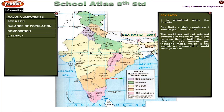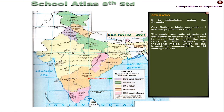Sex ratio is calculated using the formula: Sex ratio equals male population divided by female population, multiplied by 100. The world sex ratio of selected countries is shown below. In India, the sex ratio is 933 females per 1000 males, which is the lowest as compared to the world average of 986.